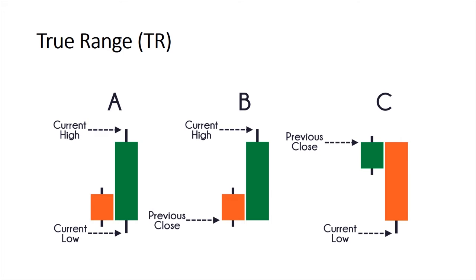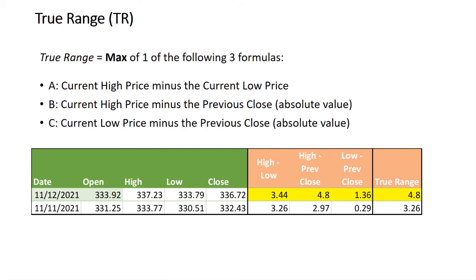Here's a graphical representation of those three formulas. First, the current high price minus the current low. Second, the current high price minus the previous close. And lastly, the current low minus the previous close. We calculate those three formulas and then take the highest amount. So we came up with high minus low of 3.44, today's high minus previous close of 4.80, today's low minus previous close of $1.36, and we take the 4.80 since that's the highest.